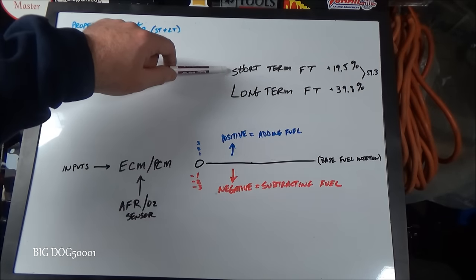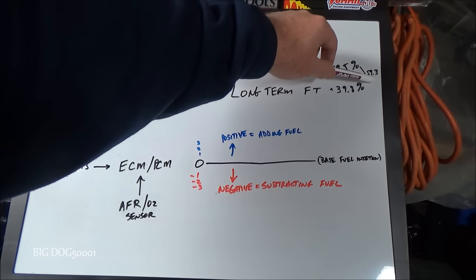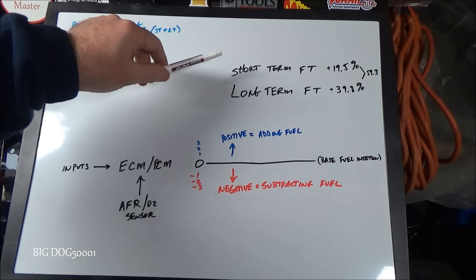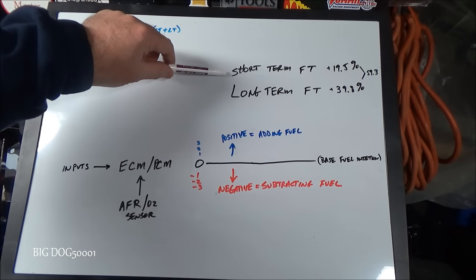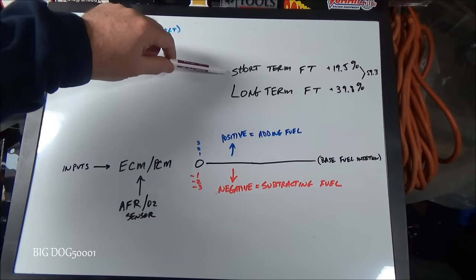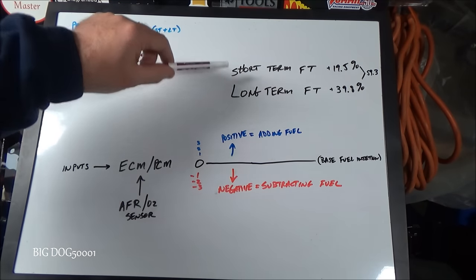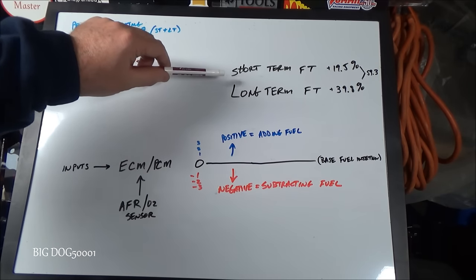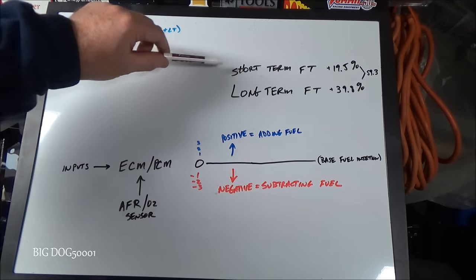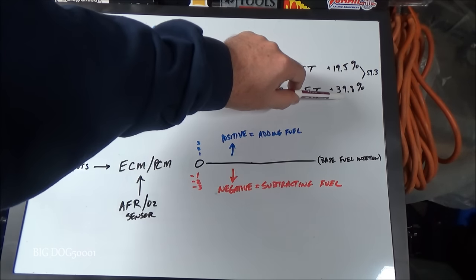Why doesn't the computer just have one fuel trim? Basically, to make the engine run better we want to make quick fast corrections — that's what the short term is for. Its job is to make corrections in almost real time, back and forth positive and negative really fast but small, to keep it at the proper air-fuel ratio.